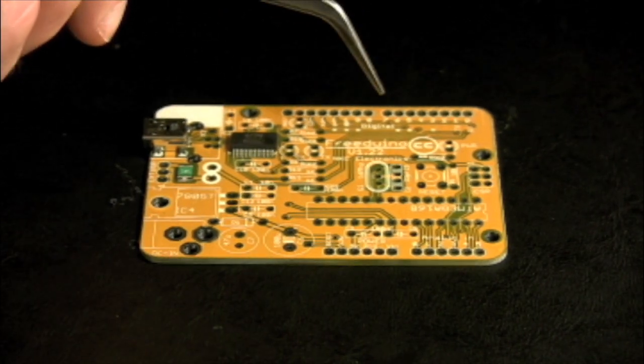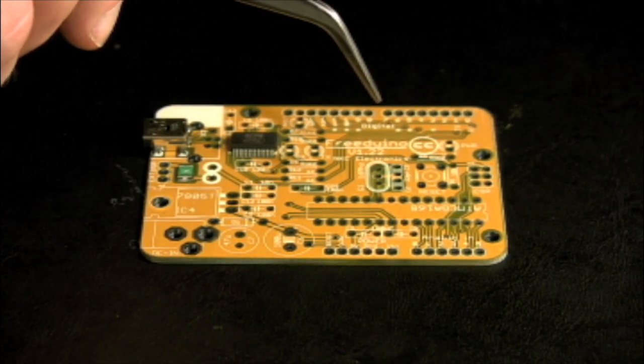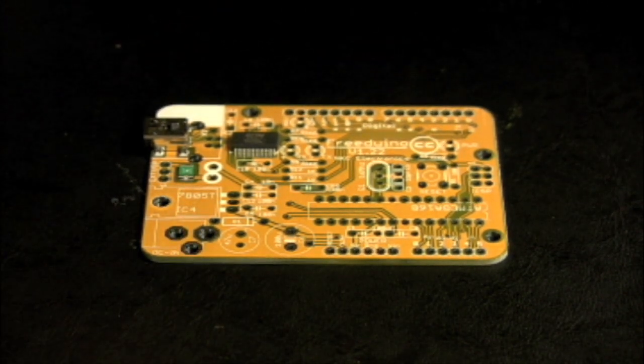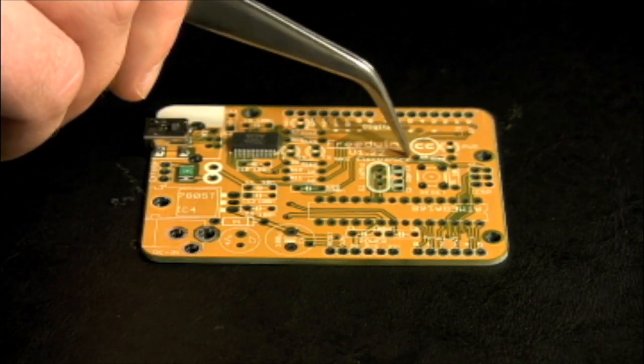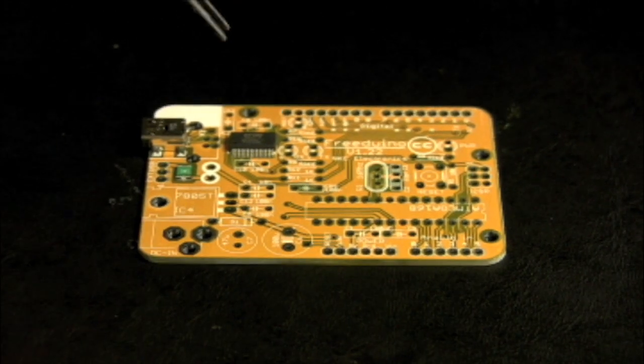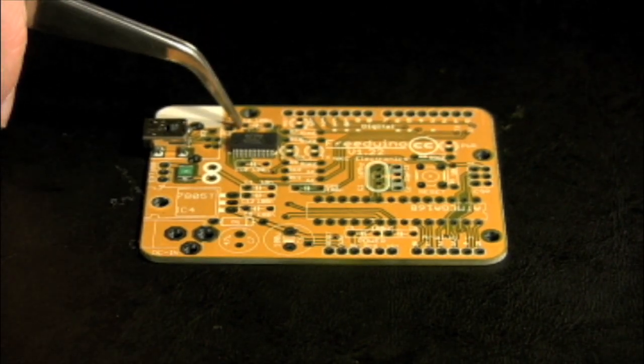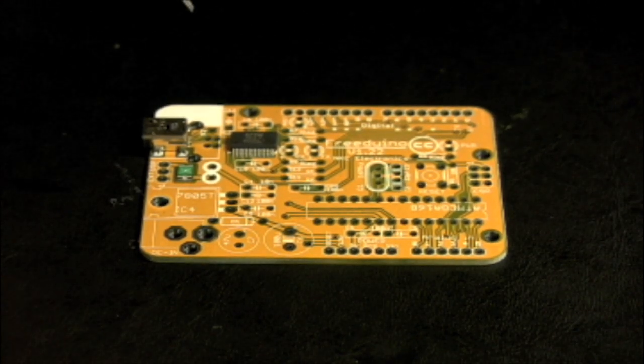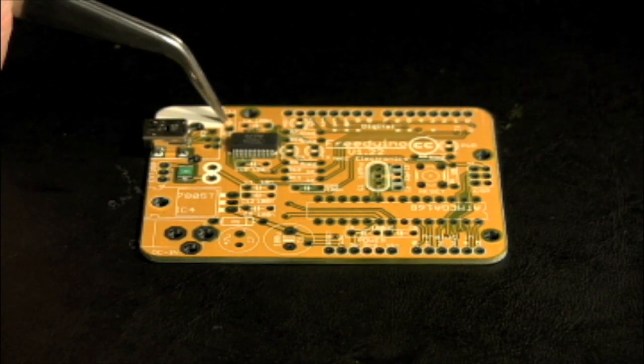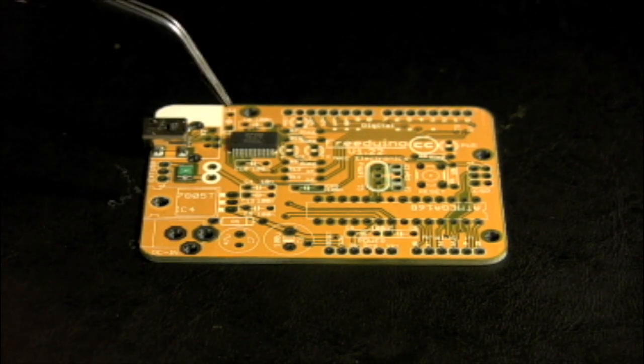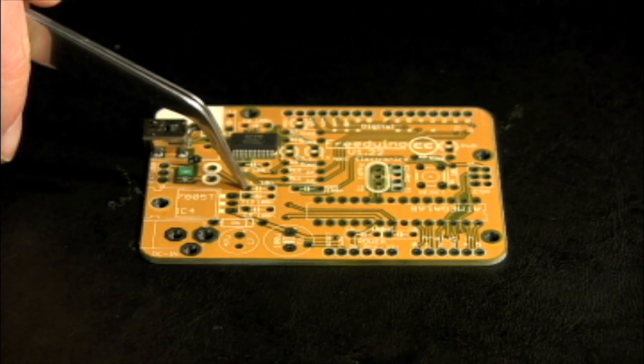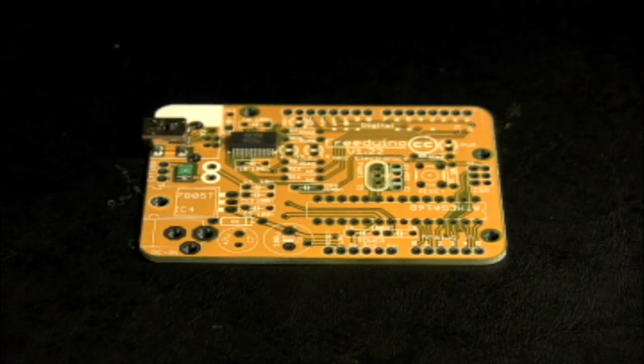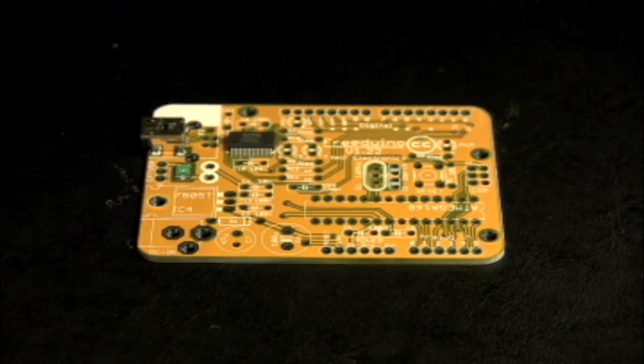We will solder the power LED and associated 1K resistor, then two 100 nanofarad capacitors on either side of the FTDI chip, next one 4.7 microfarad capacitor and then two 10 nanofarad capacitors. Lastly, we'll solder in the 3-pin male header.